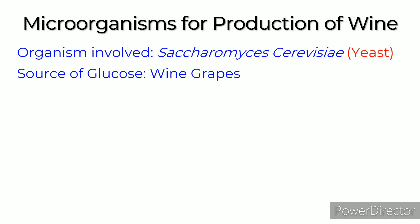The organism involved in the production of wine is Saccharomyces cerevisiae, a yeast whose source of glucose is wine grapes. To produce wine, the grapes are first sampled and then harvested. The grapes are then crushed or pressed and fermented by yeast. The process of blending occurs and then they are aged after stabilizing. The products are then filtered, bottled, labeled, and dispatched.